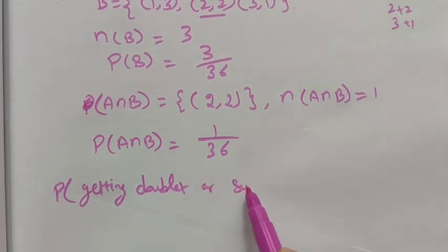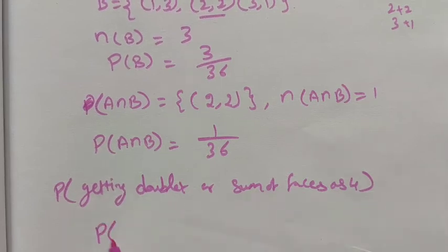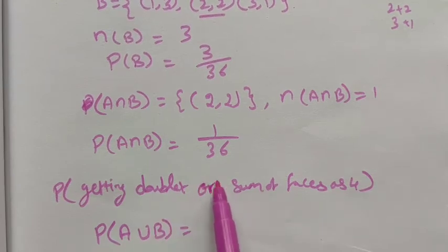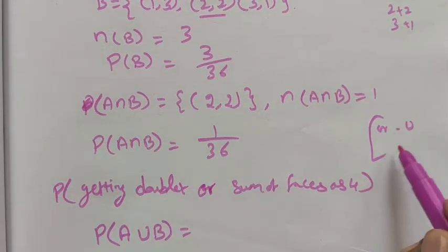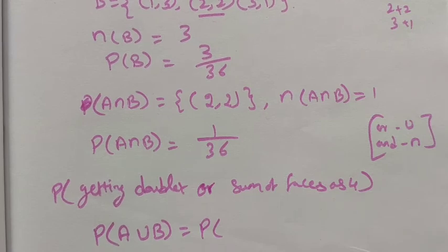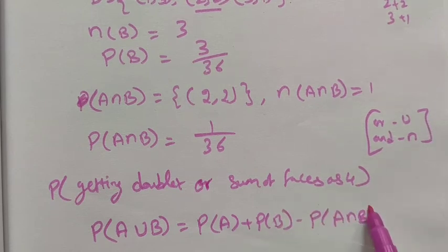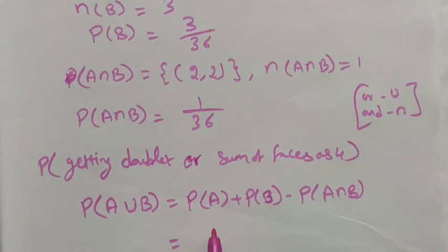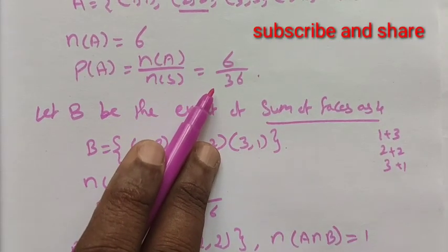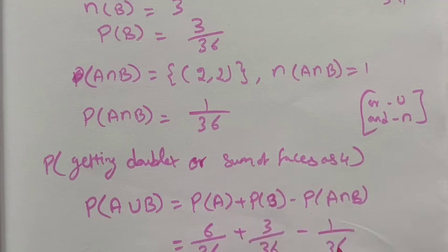We want to find the probability of getting a doublet or sum of faces as 4. Getting a doublet is event A and sum of faces as 4 is event B. 'Or' means we use union. By the addition theorem: P(A ∪ B) = P(A) + P(B) − P(A ∩ B) = 6/36 + 3/36 − 1/36.